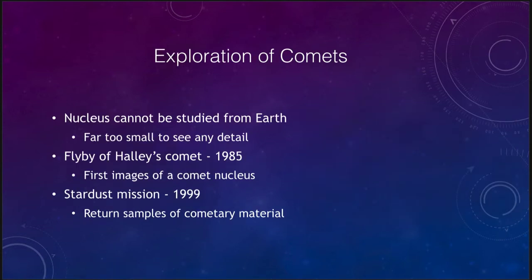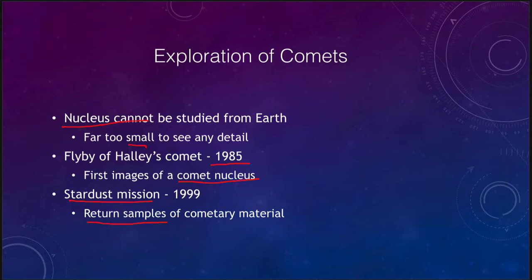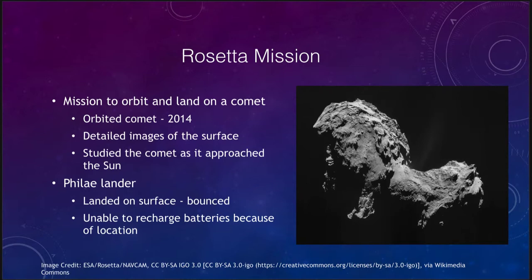How have we explored comets? The problem is that the nucleus cannot be studied from Earth — it's too small to see any detail. The first explorations were of Halley's Comet in 1985, the last time it came close to the inner solar system, giving us the first images of a cometary nucleus. There was also the Stardust mission in 1999, which went out to gather samples of cometary material and bring them back to Earth for study. The best study of a comet to date, however, has been the Rosetta mission.